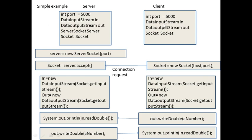Similarly, on the client side, we have DataInputStream 'in', DataOutputStream 'out', and the socket is created. The socket exists on both sides. From the client, we create the socket reference using the Socket class, passing the host IP address and the port number. On the server side, a new ServerSocket reference is created with the same port number, and we call socket.accept() to accept the connection.